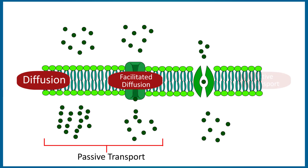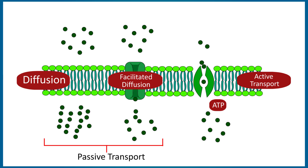Now we are going to have an example of primary active transport and secondary active transport. In the primary active transport, energy is liberated directly from the breakdown of ATP. With the help of this ATP, the molecules will move from low concentration to higher concentration — exactly the opposite of what we discussed for passive transport.